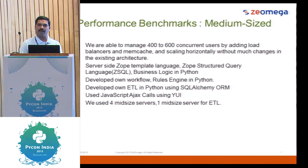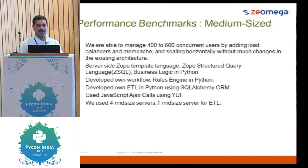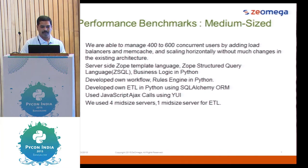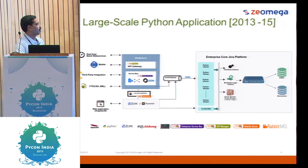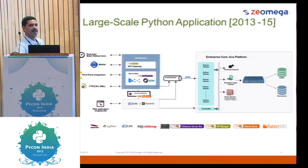We also converted the front-end technology to JavaScript, using YUI at that time. We added one more server for the ETL process. From 2013, we started creating a large-scale Python application. We are going to continue extending this stack to support a minimum of 30,000 concurrent users. We have benchmarked and tested for 3,000 concurrent users with the same model.